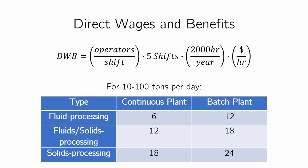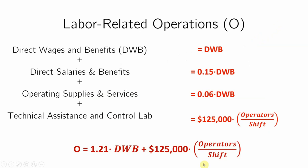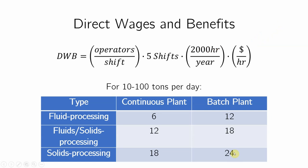The hourly salary can be assumed to be somewhere between $30 and $40 per hour in the United States as of 2020. We also need operators per shift, and there's a heuristic for this. If your plant processes fluids and operates continuously, use 6 operators per shift. If it's a batch plant, use 12.